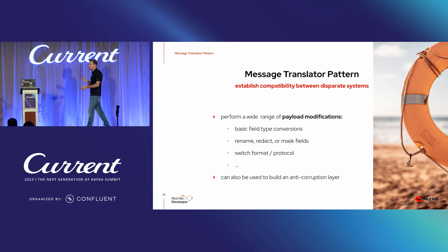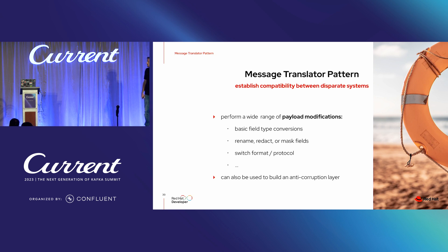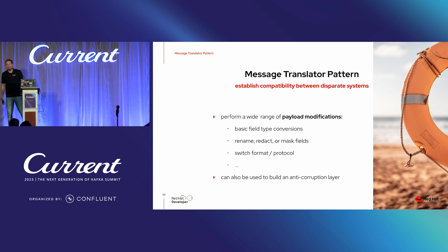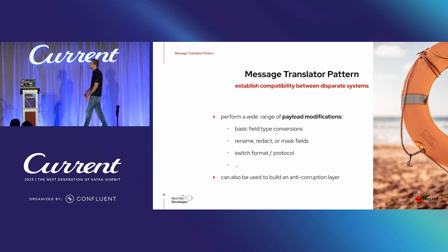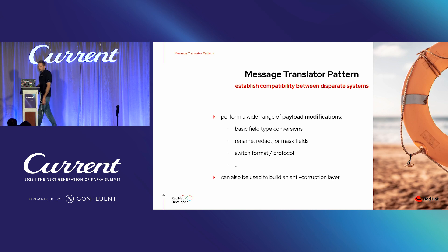The way we do this is by establishing compatibility between originally disparate systems through payload modifications on the fly. The message translator pattern is used to make compatible what originally wasn't. We can perform essentially any payload modification: basic data type conversions, removing certain fields, masking or redacting sensitive information, encrypting specific fields, or switching the serialization format. In our case we'll see working with a CSV file and bringing it to a JSON structure. The same idea can also be used to build what's called an anti-corruption layer in domain-driven design.